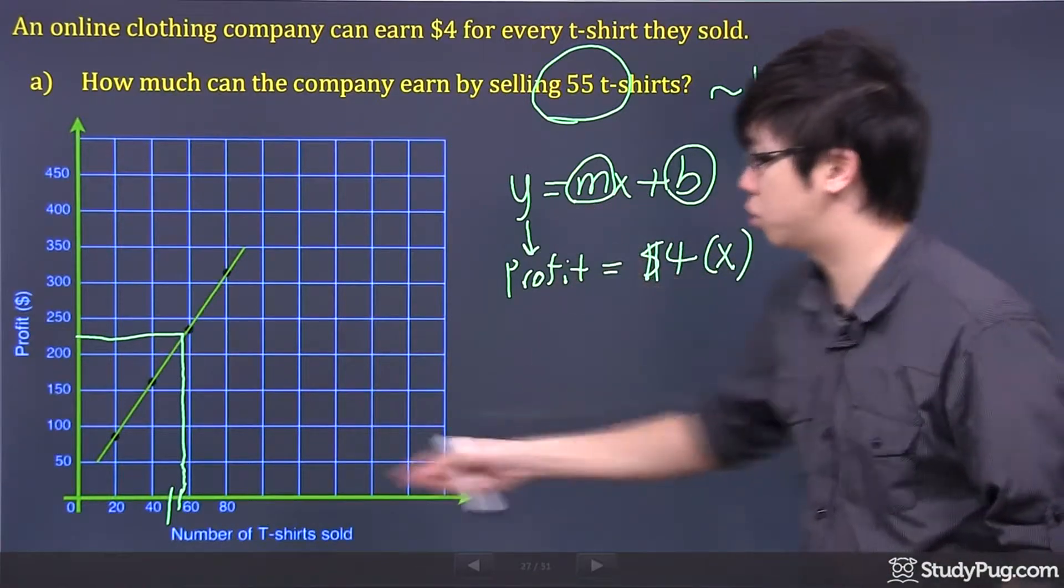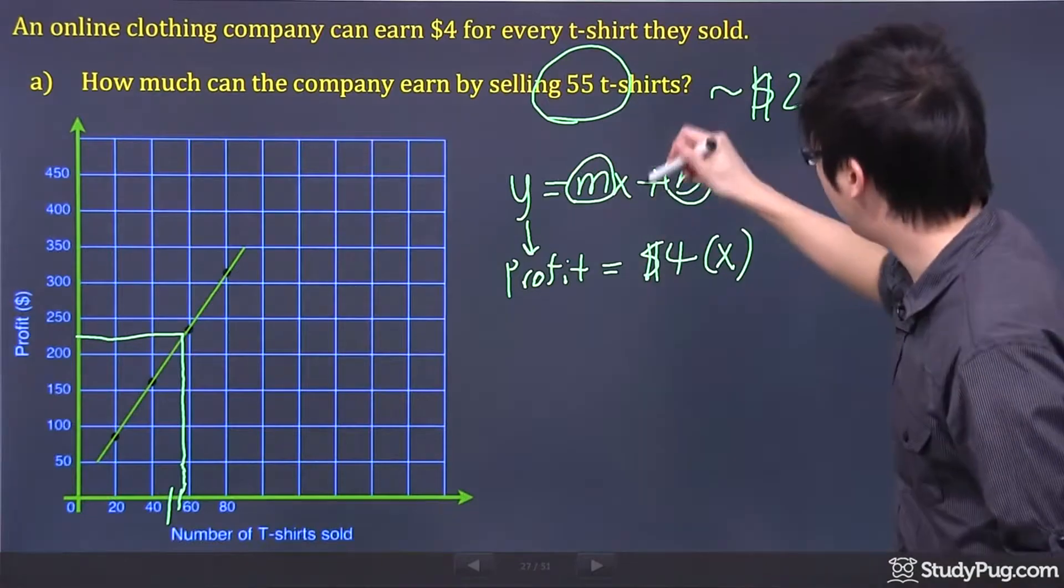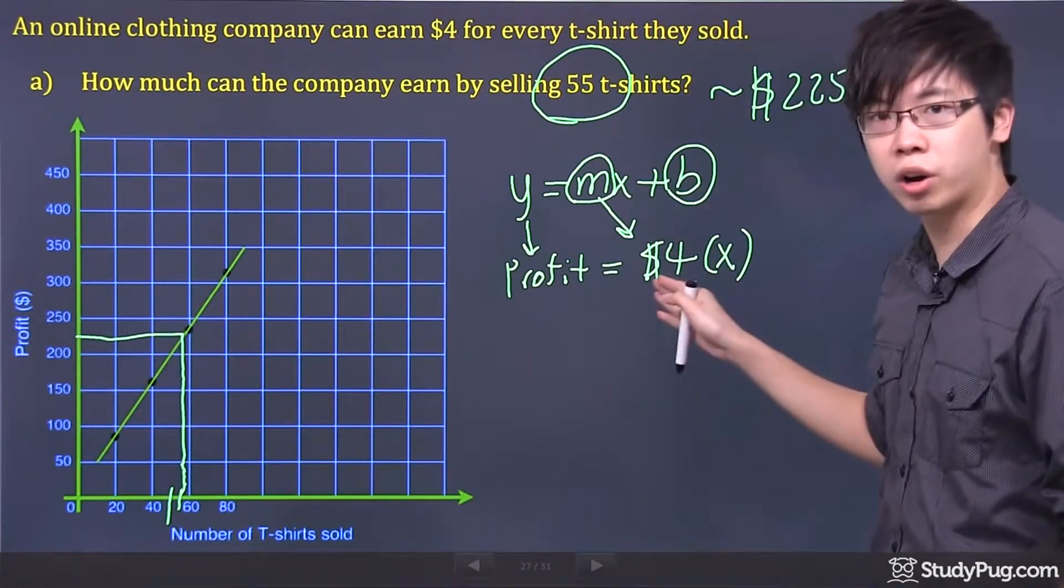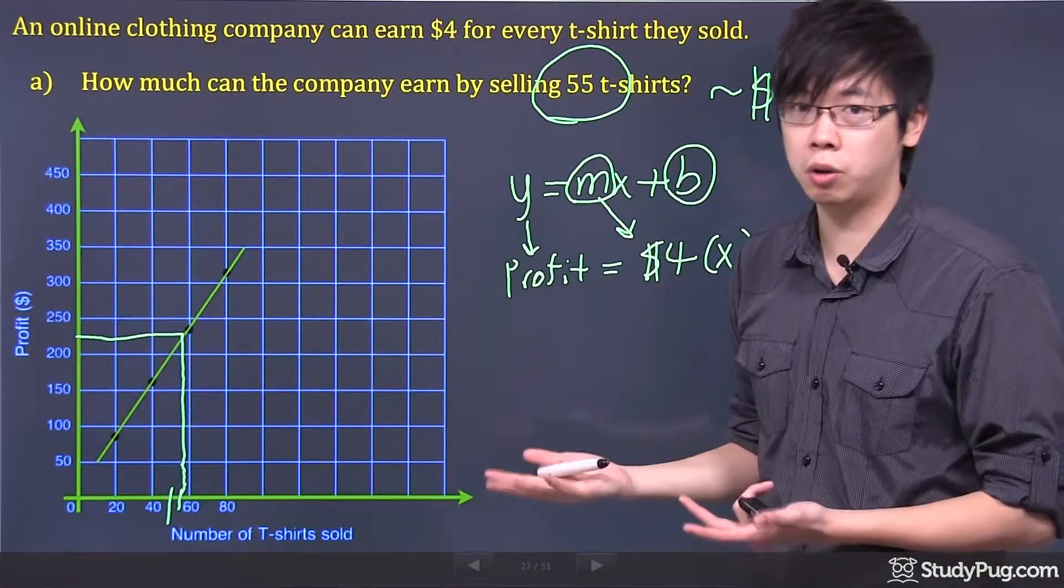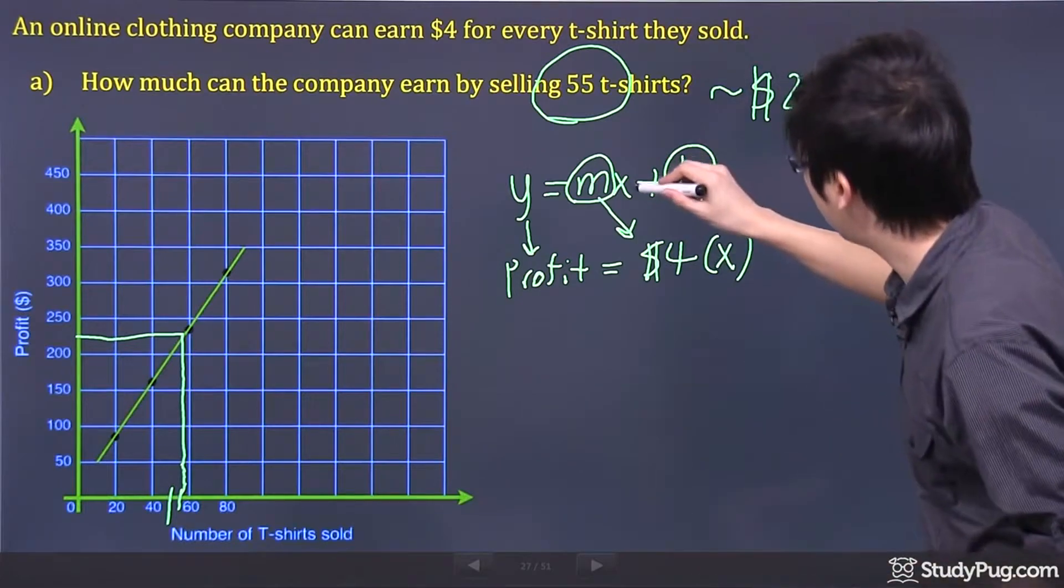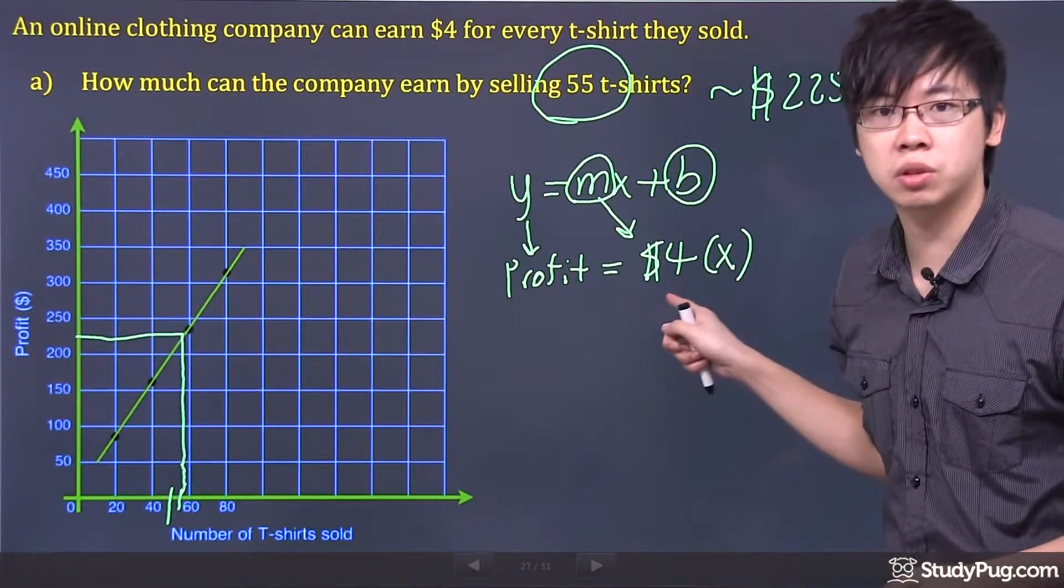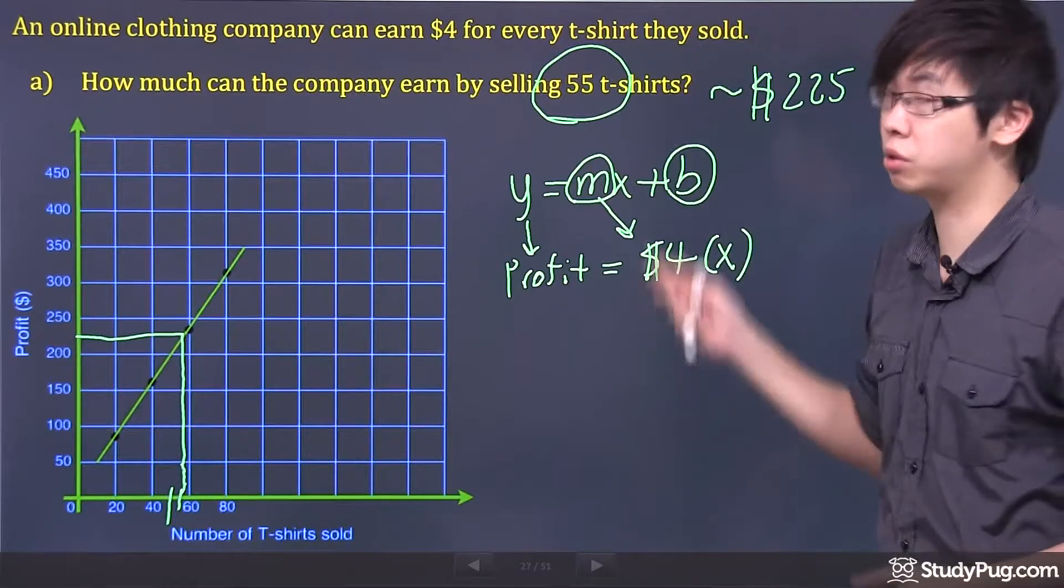See, the y is the profit, which is the y-axis. And the m is the 4, which is, we call it a slope. You're earning that in the future. And the x is the number of items that you're selling, which is the number of clothes, or sorry, the t-shirt.